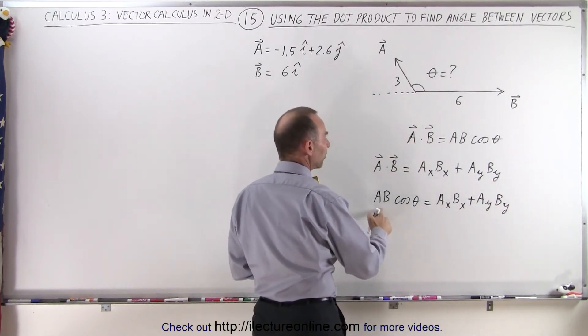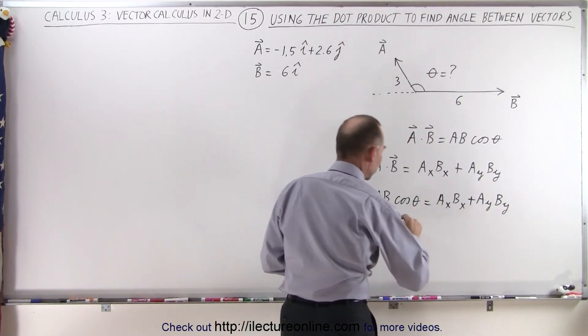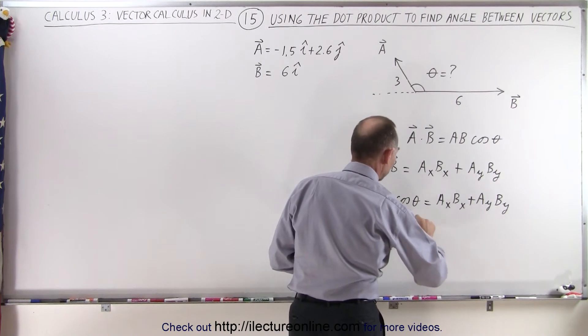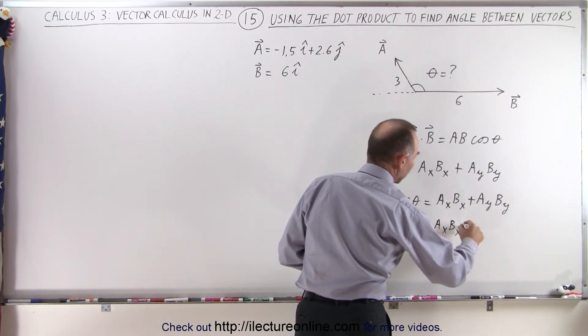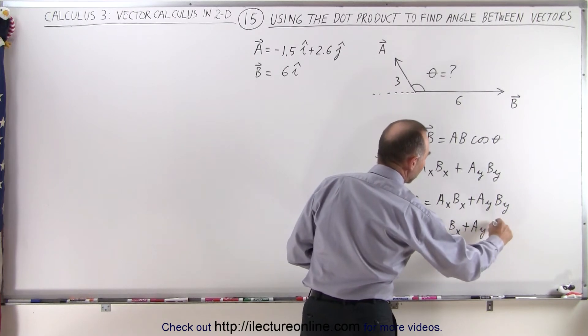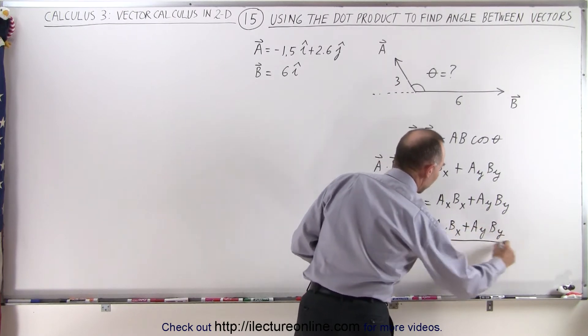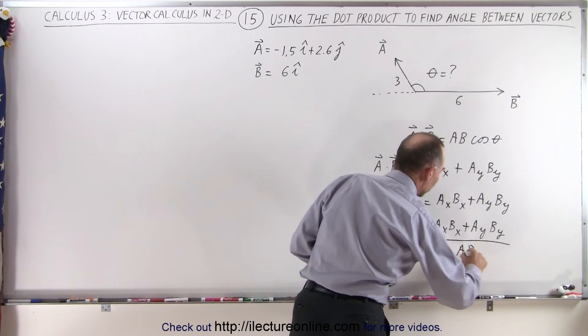And then if we divide both sides by the magnitude A times B, we can say that the cosine of theta is equal to A_x B_x plus A_y B_y all divided by the magnitude of A times the magnitude of B.